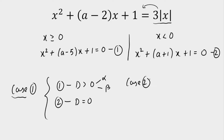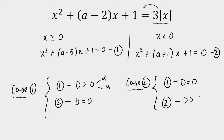For Case 2, we have to get two roots from the second equation and one root from the first equation. So for the first equation, the discriminant value should be equal to 0, giving one real root — let's call it gamma. For the second equation, discriminant should be positive, giving two roots alpha 1 and beta 1. Now I am going to apply Case 1 and Case 2 to calculate the values of A.